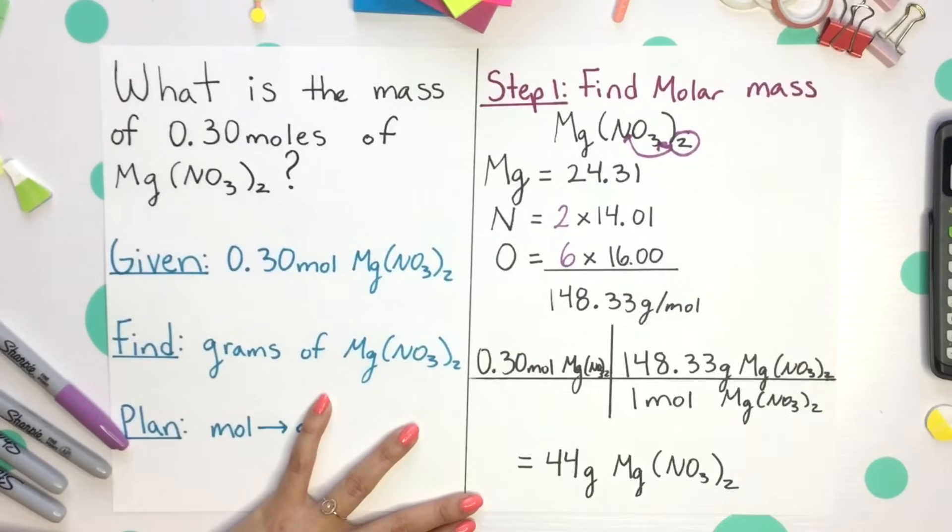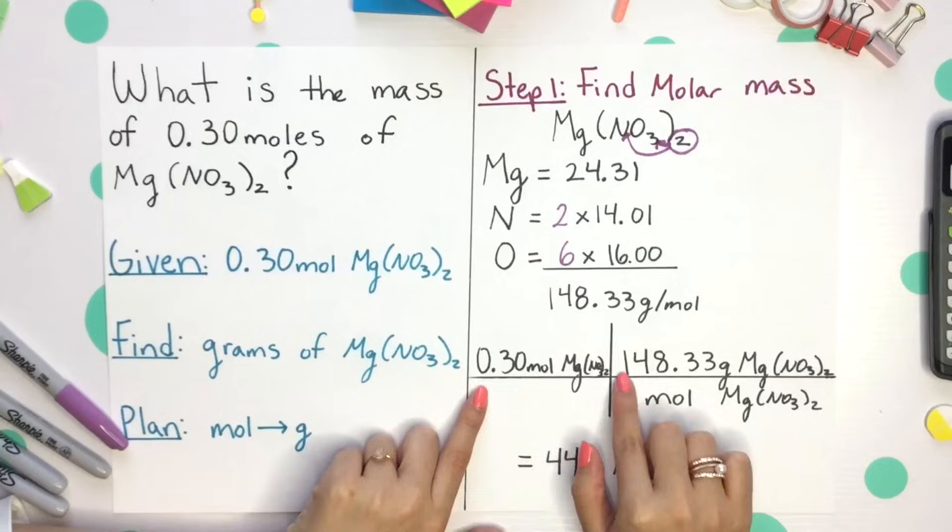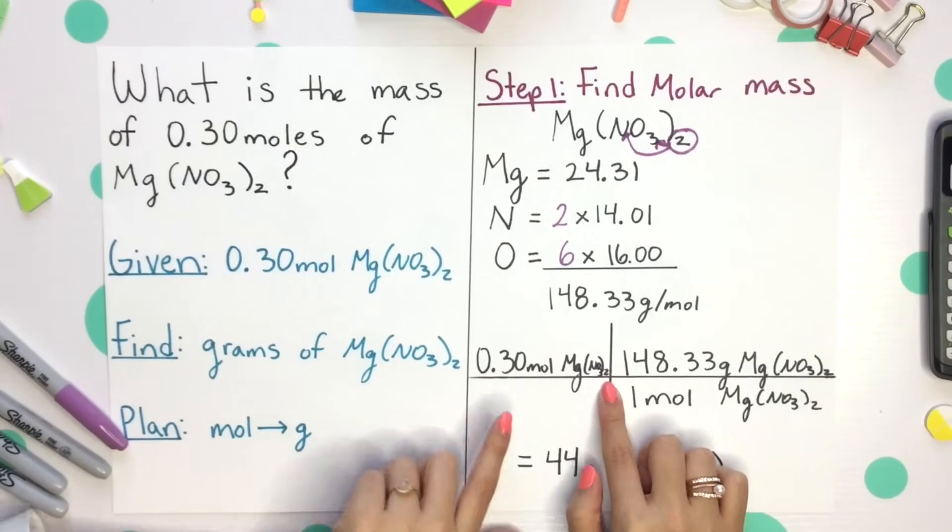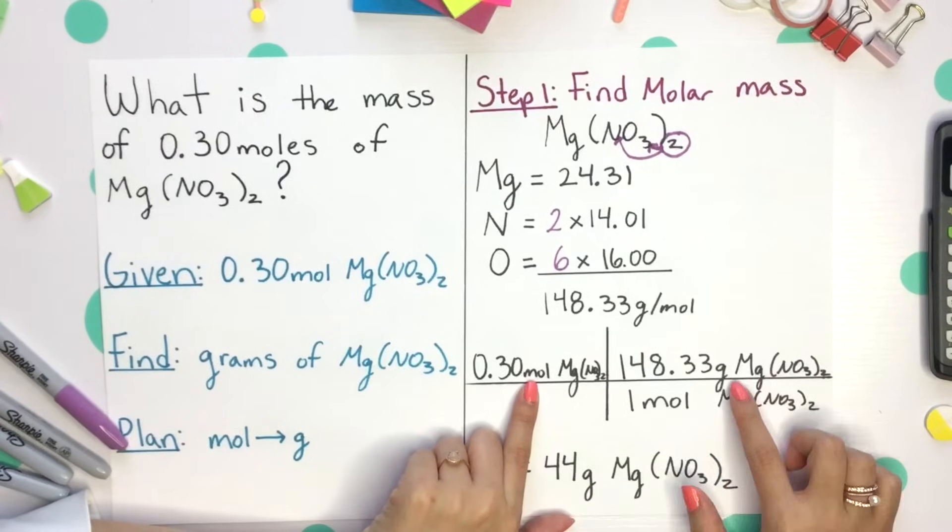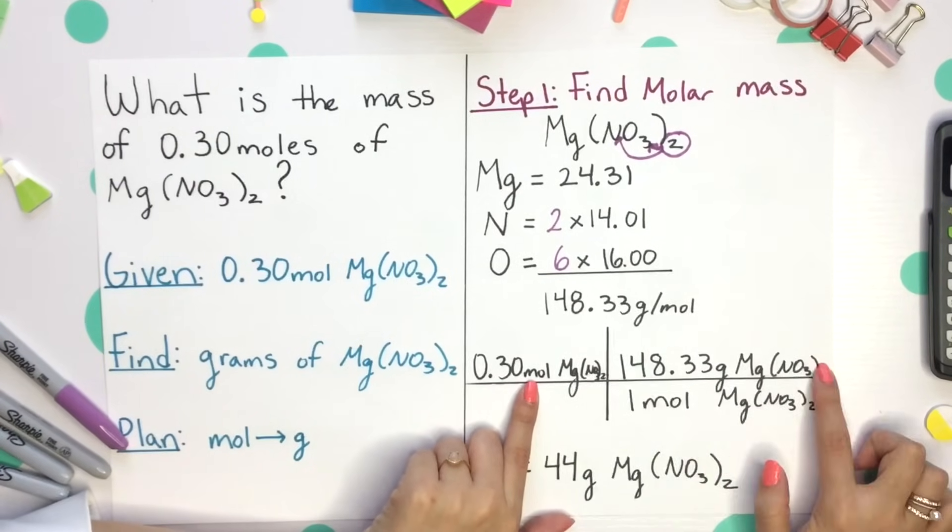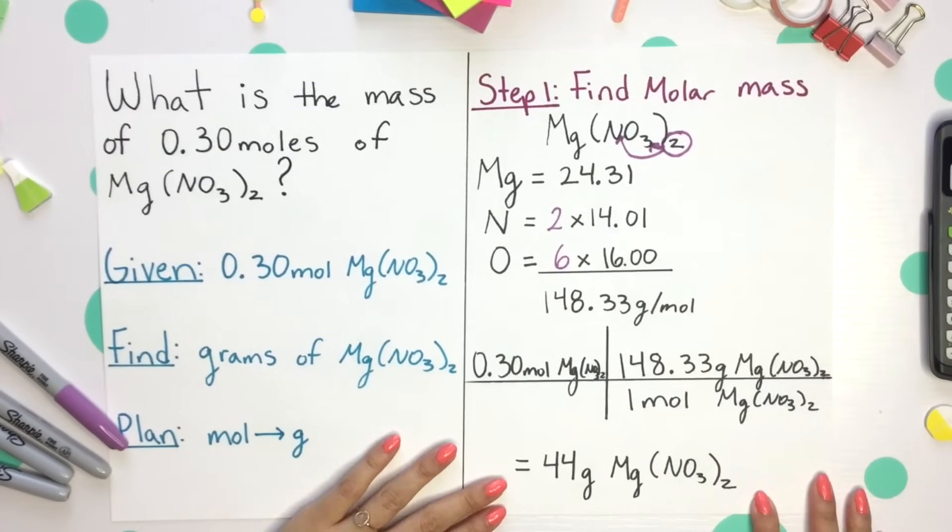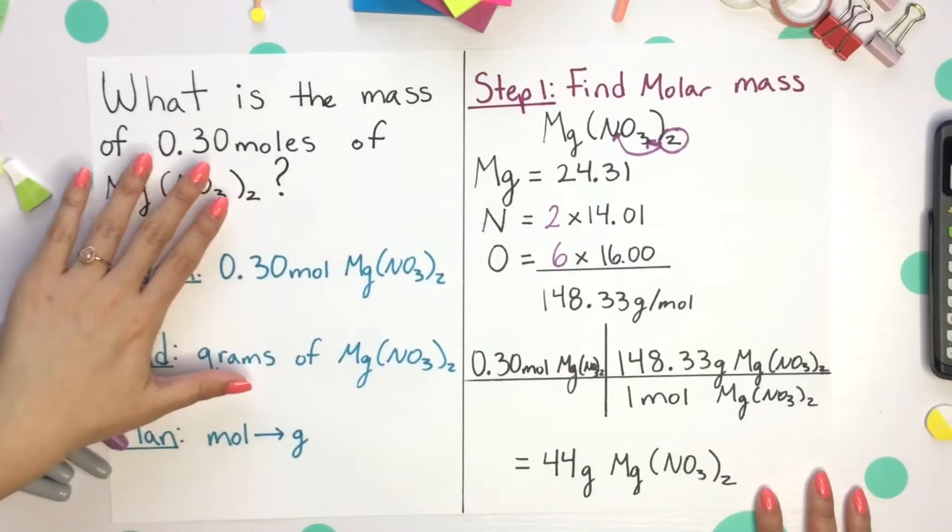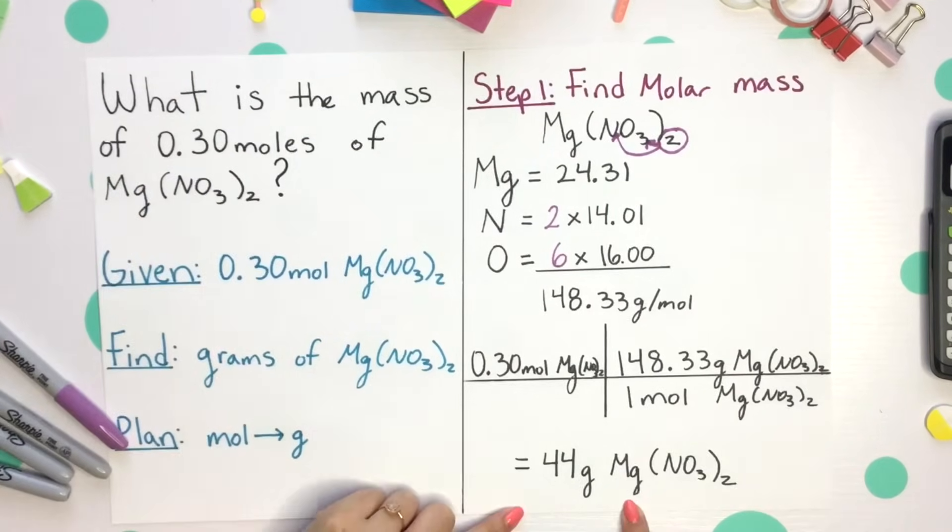Let's set up our conversion. And we'll have 0.30 moles on top of magnesium nitrate. Aligning your moles across from each other, those moles would then cancel, and we'll get to grams of magnesium nitrate, multiply straight across. Our final answer is going to be two significant figures, because our given was only two sig figs. So our answer is 44 grams magnesium nitrate.